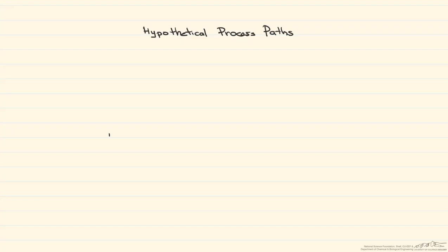One of the advantages of a state function is that whatever property you are looking at depends only on the initial and the final states. It does not matter how that property got there. So in this screencast, we're gonna look in particular at enthalpy, which is our h-bar, and that bar signifies that it is specific enthalpy per mole or per kilogram.